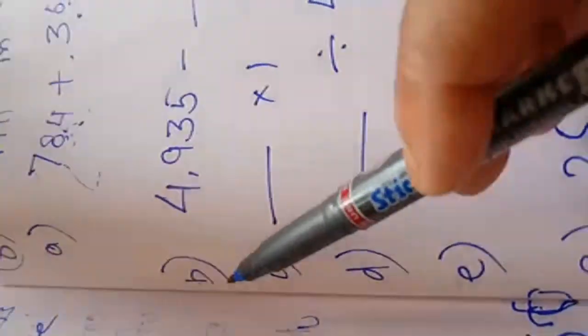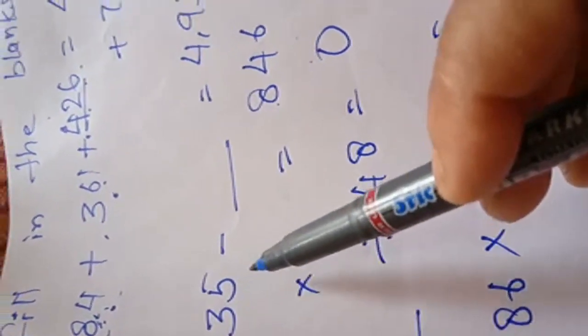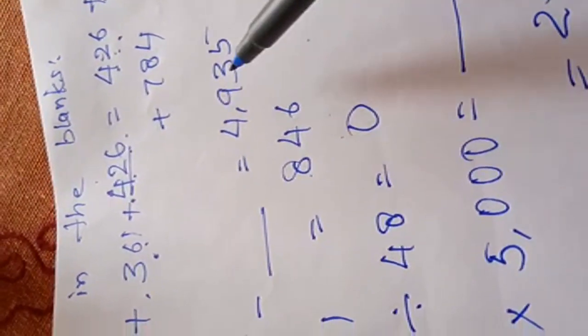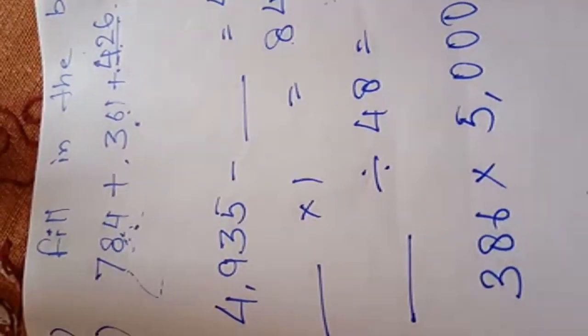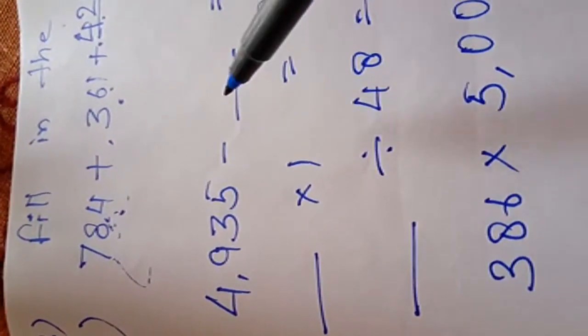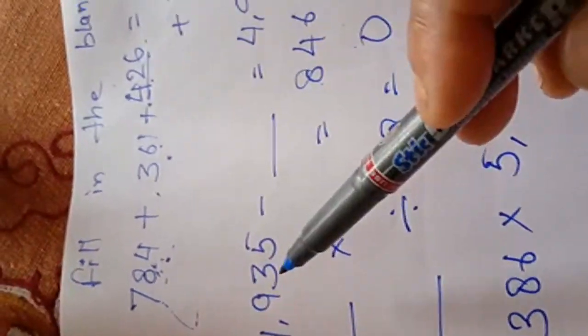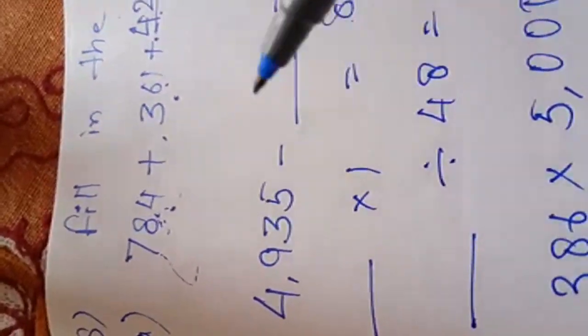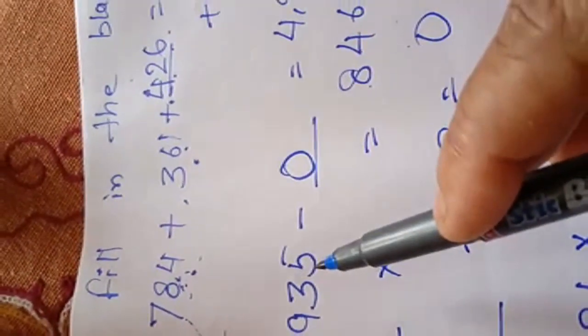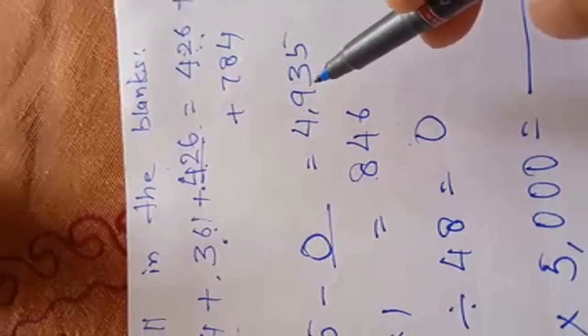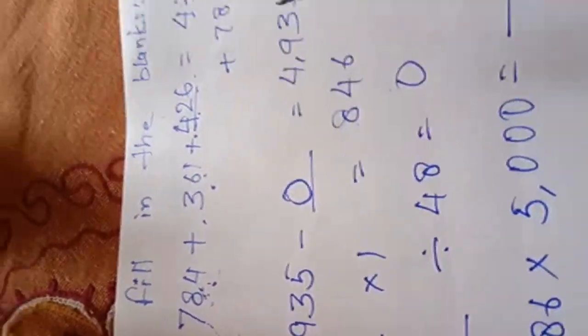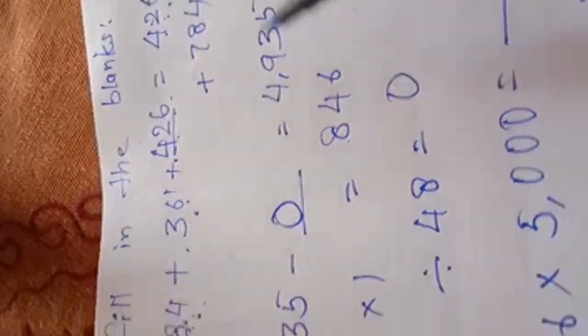Now, come to B. 4935 is subtracted by what? Then we get 4935. When we subtract 0 from a number, then the difference is that number itself. If we subtract 0 from 4935, then the difference is also the number itself. If 0 is subtracted from a number, the difference is the number itself.